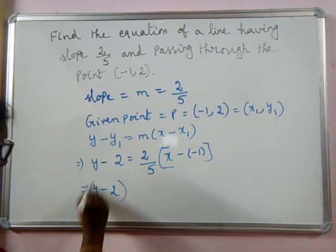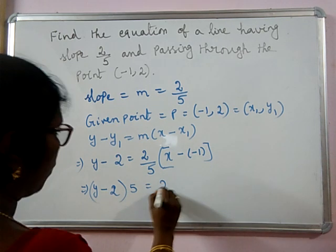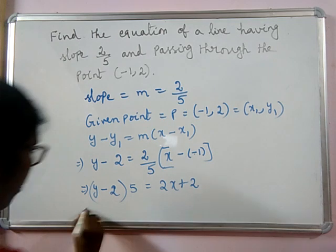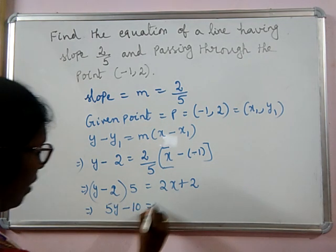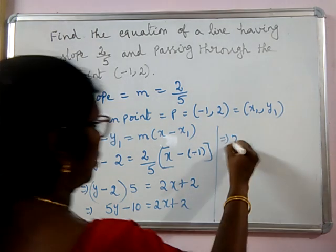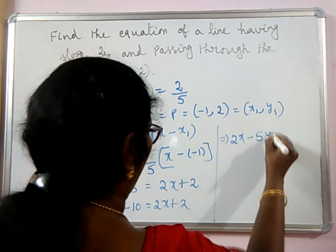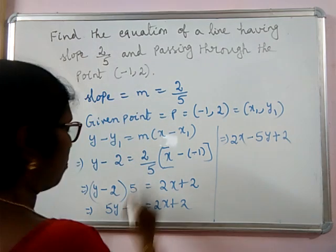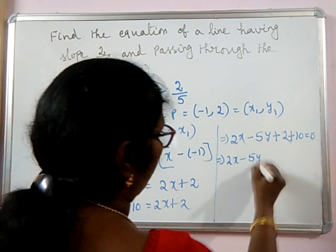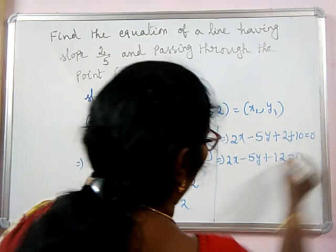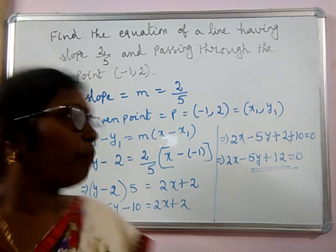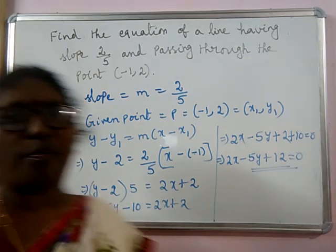Bringing 5 to the other side: 5(y − 2) = 2(x + 1), which gives 5y − 10 = 2x + 2. Rearranging: 2x − 5y + 2 + 10 = 0, that is 2x − 5y + 12 = 0. This is the equation of the line having slope 2/5 and passing through the point (−1, 2).